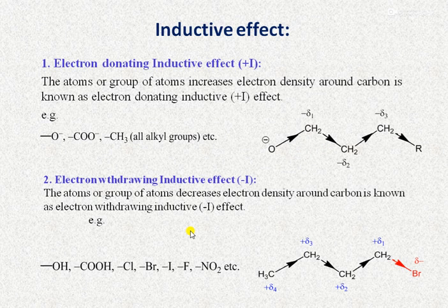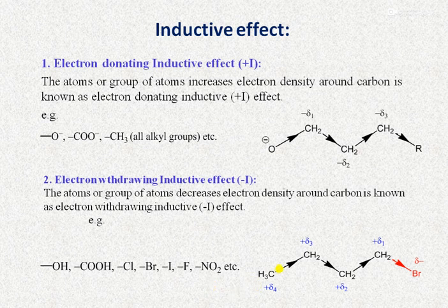Atoms or groups that decrease electron density around carbon show the electron-withdrawing inductive effect (-I effect). Examples include hydroxyl (OH), carboxylate, all halogen atoms, nitro groups, and unsaturated groups. For example, bromine is electron-withdrawing and therefore shows the -I effect.